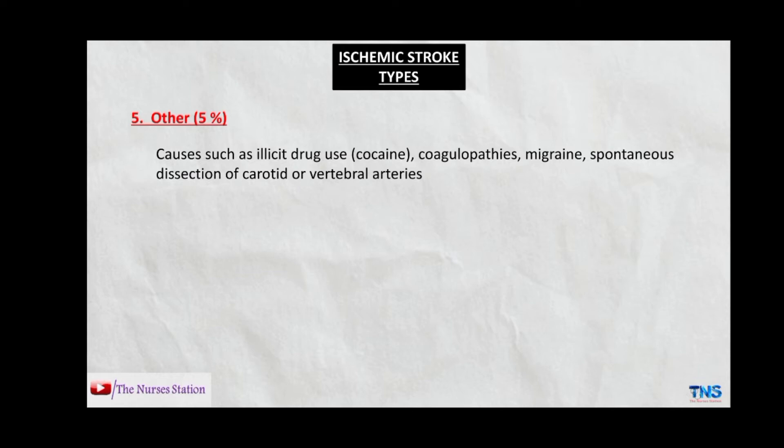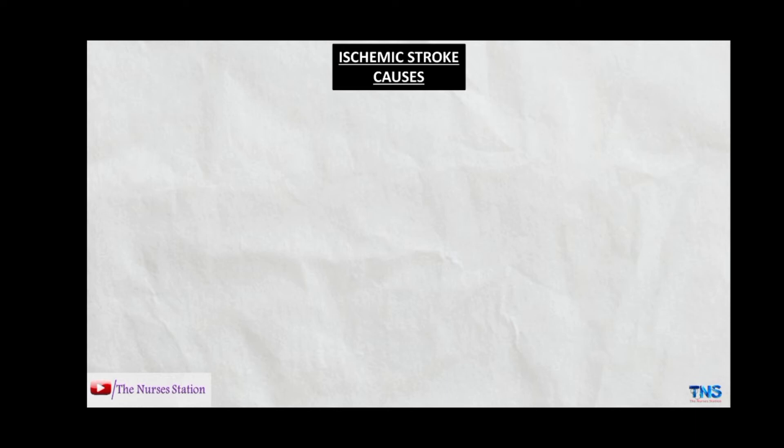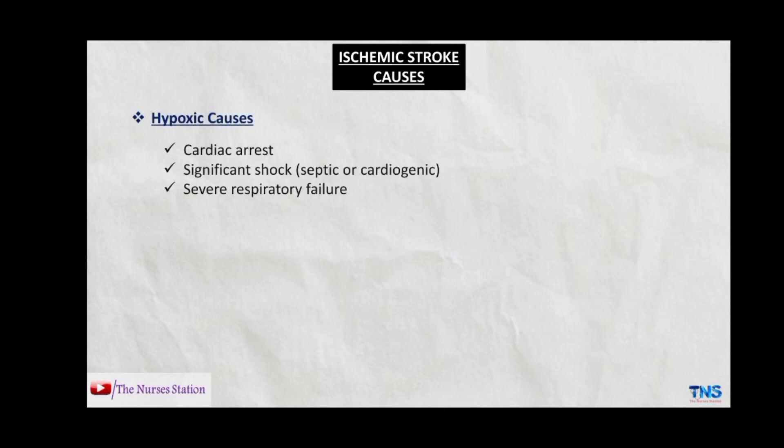This results in a bulge in the artery which can then occlude blood flow through that artery. The causes of ischemic stroke can be arranged under three headings: hypoxic causes, embolic causes, and thrombotic causes. The hypoxic causes include cardiac arrest, significant shock such as septic shock or cardiogenic shock, and severe respiratory failure.